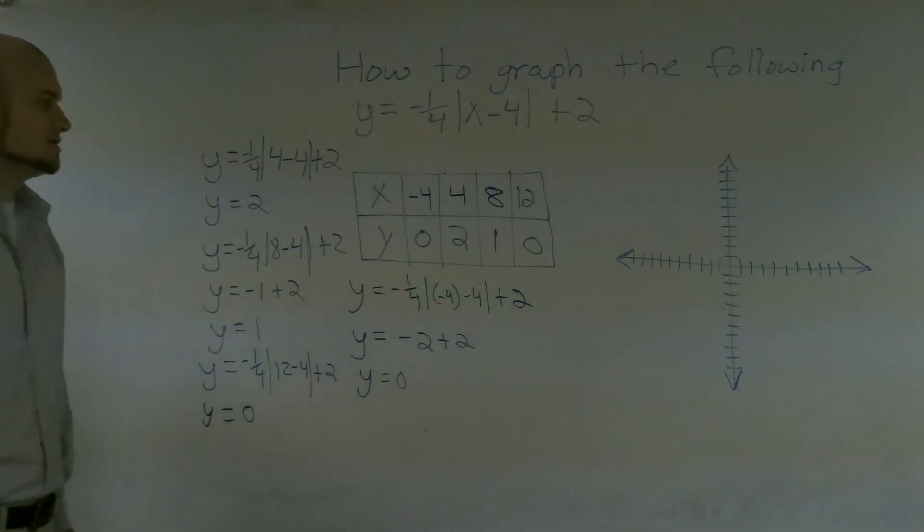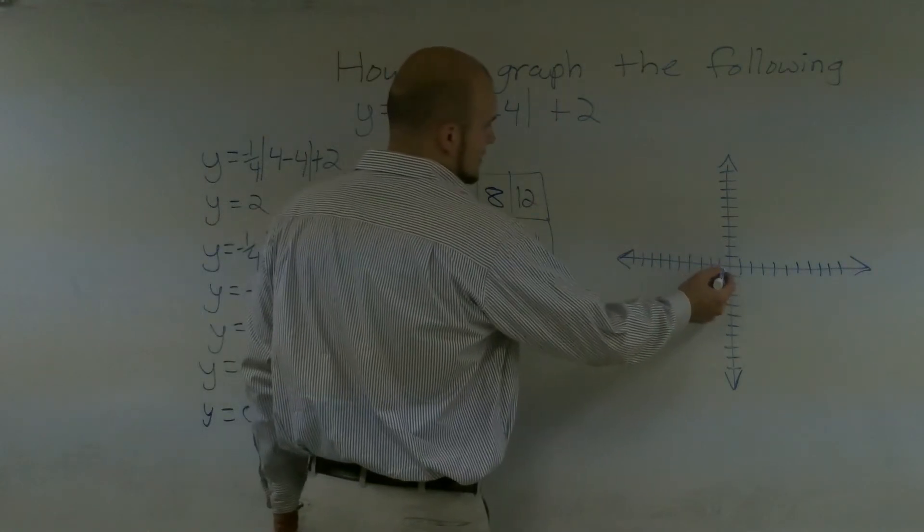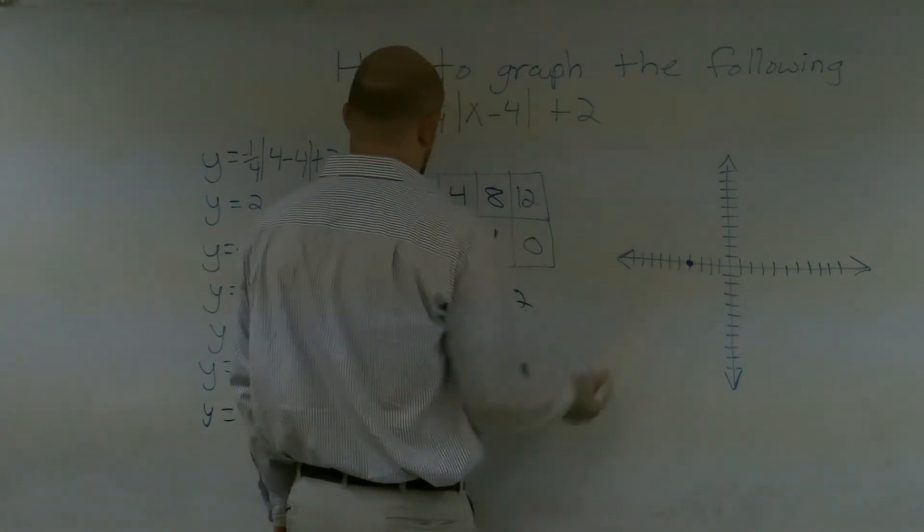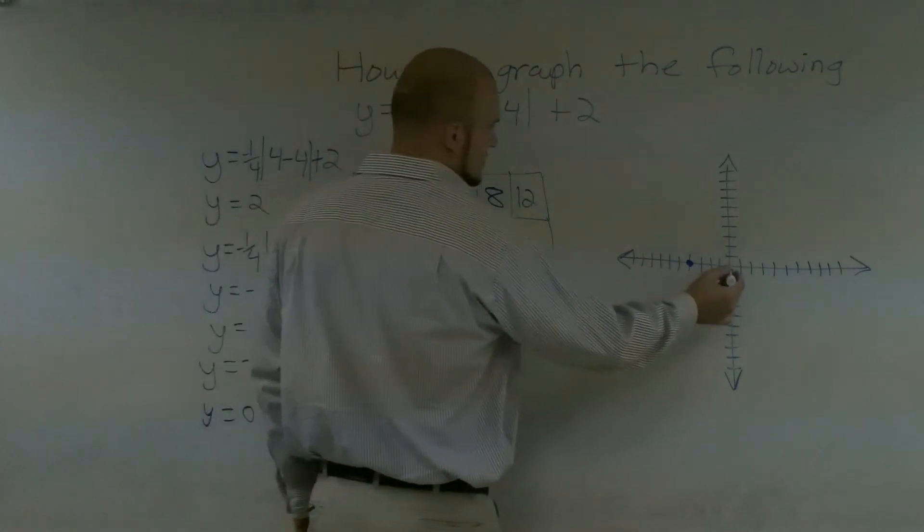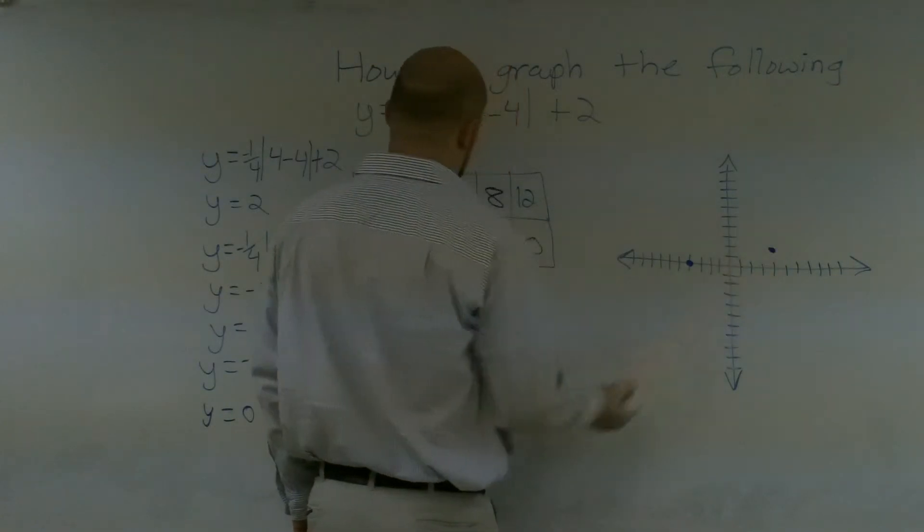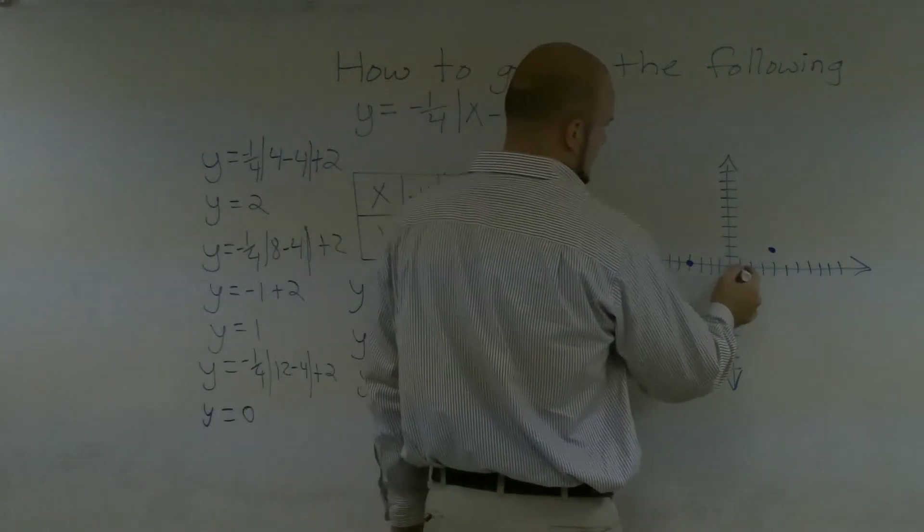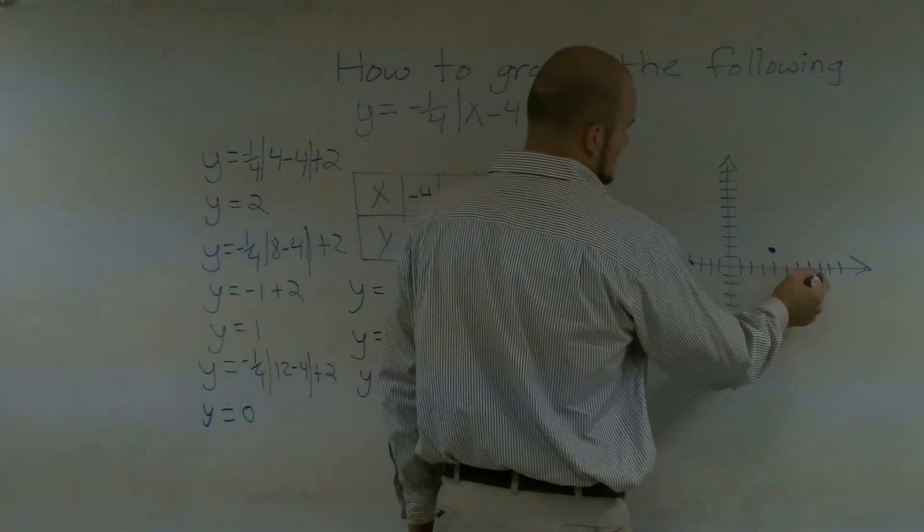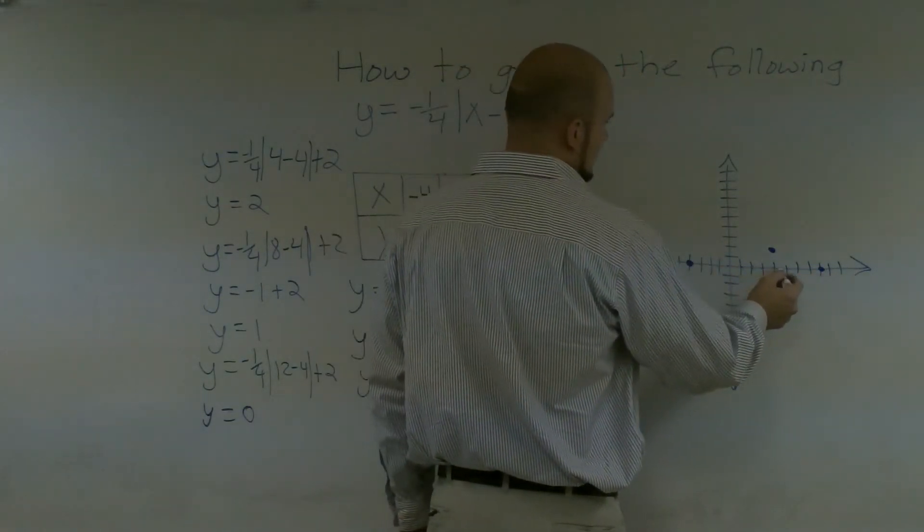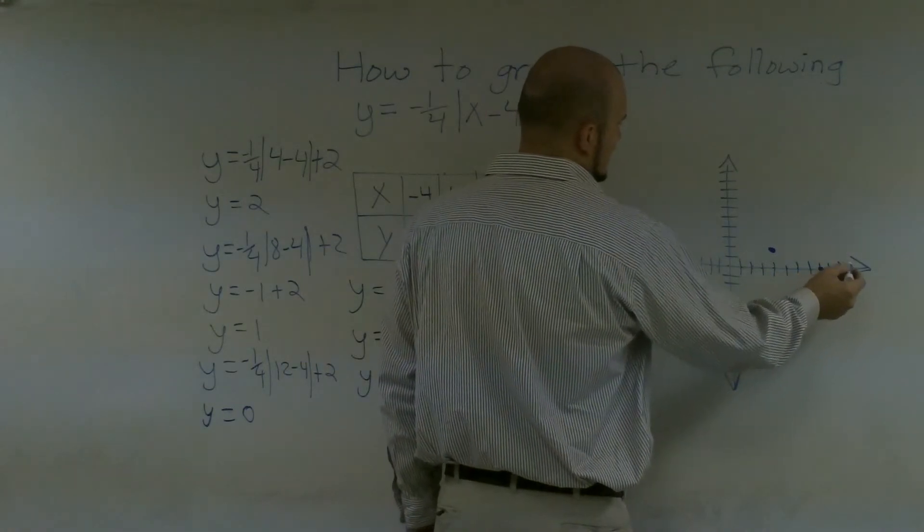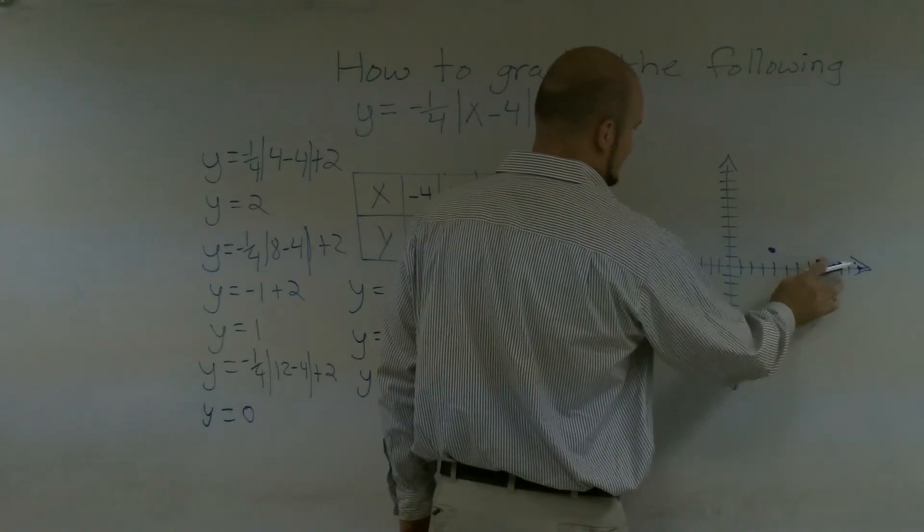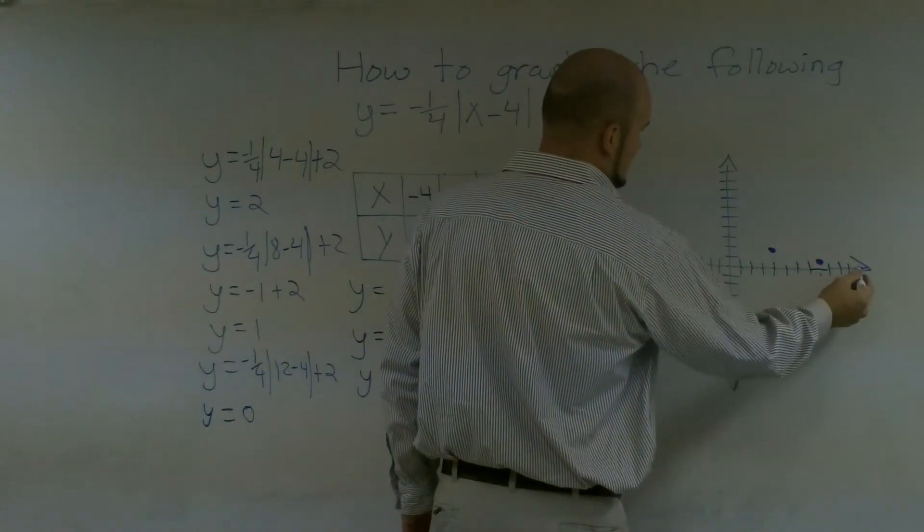So now let's go ahead and see how this is going to graph. So I go over to negative 4, and that's at y value of 0. Then I go over to positive 4, up 2. Then I go over to 8, and that's at y equals 1. And then I go over to 12, and that would be at 0. I'm sorry, that's positive. That's at 1, right? And that's at 12.